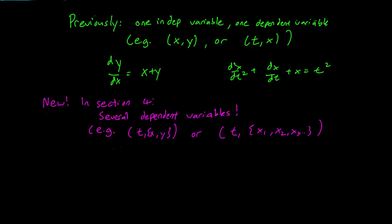The exciting new development in this section is that now we have several dependent variables. For instance, we could have an independent variable t that stands for time and functions x and y which both depend on t, or we could have an independent variable t and functions x1, x2, x3, x4 that are all dependent on t.